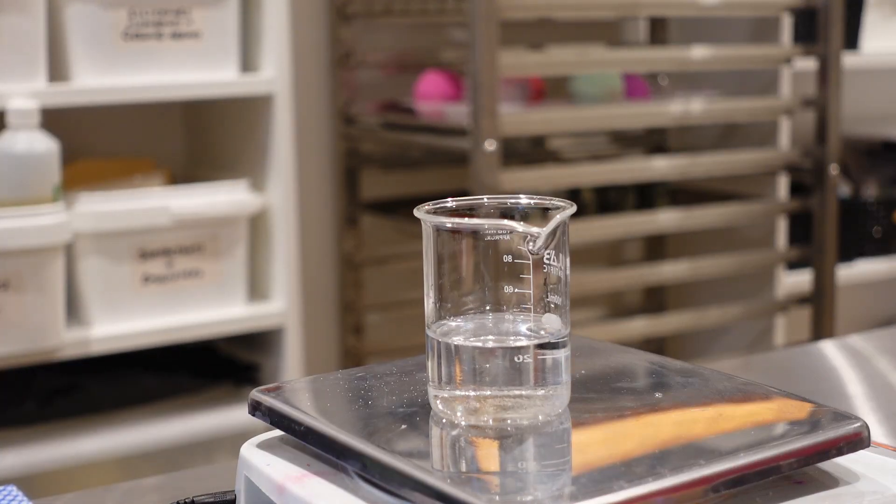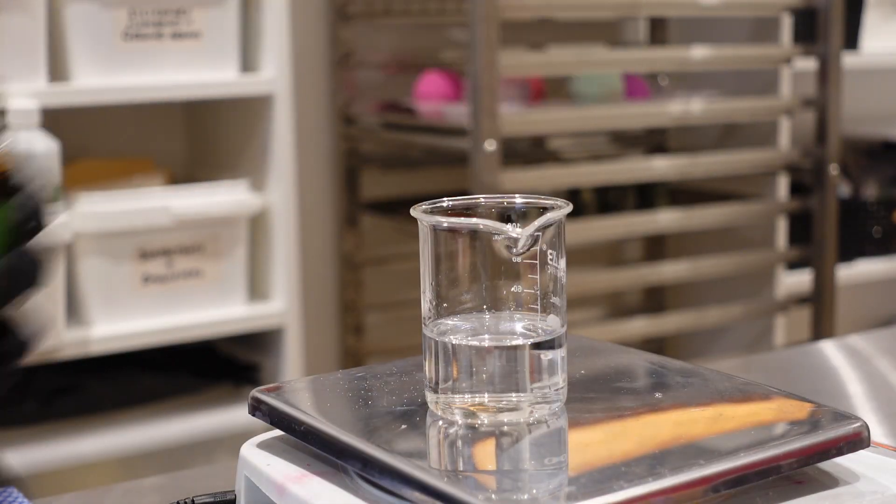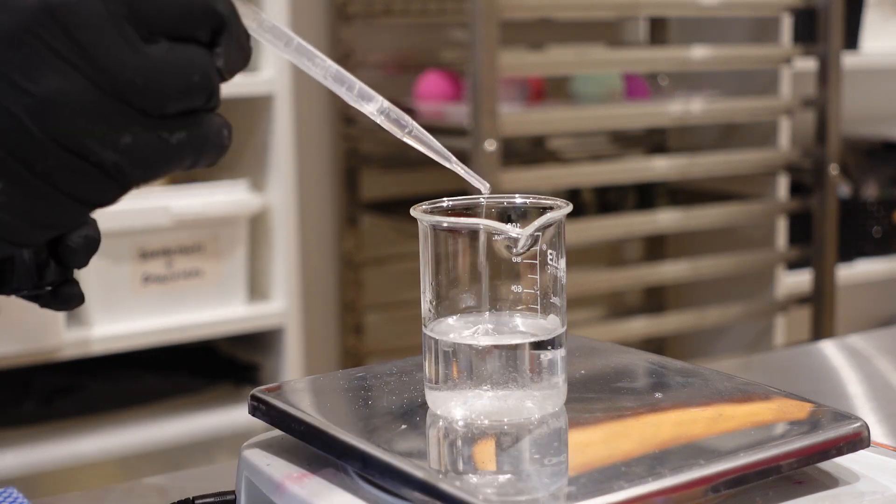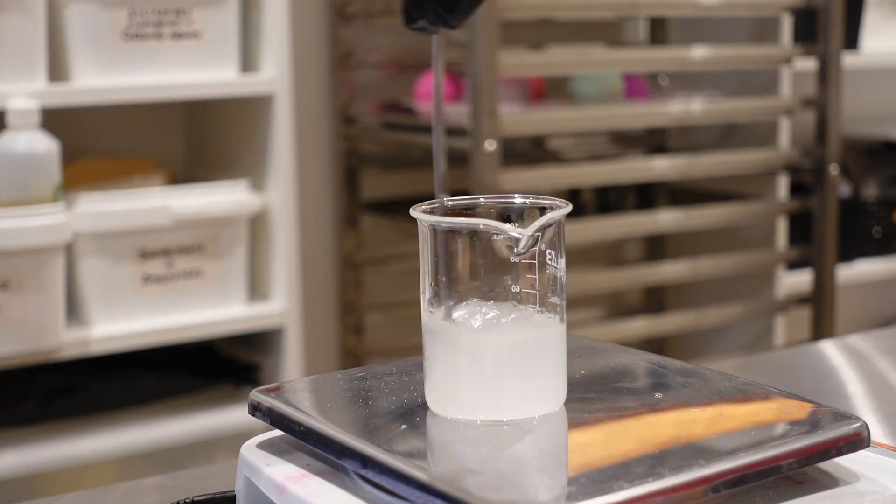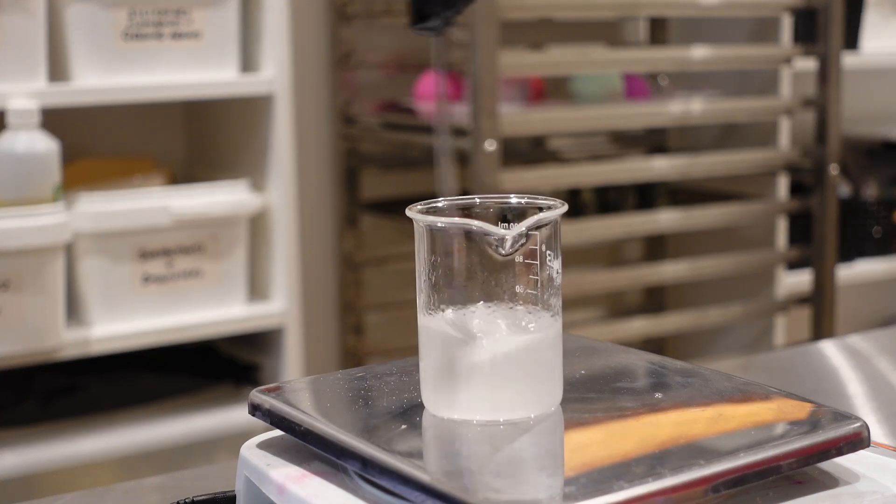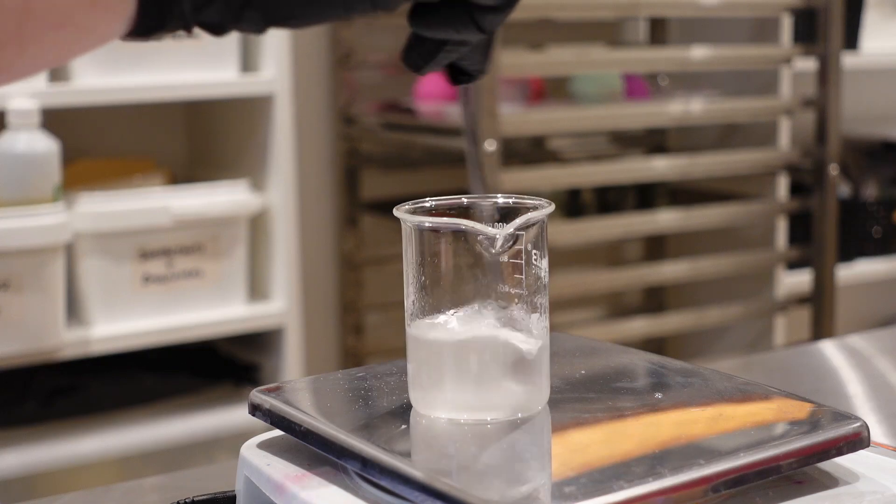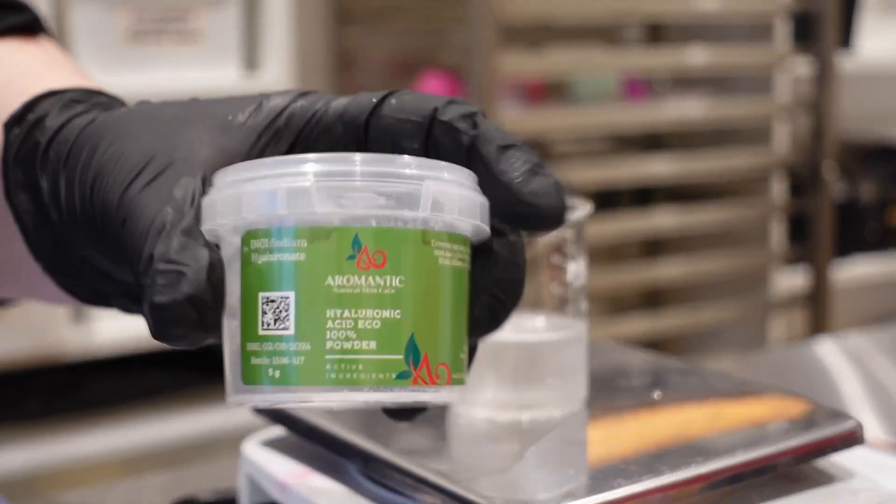Then I'm adding some preservative. For that, I'm using Saligard PCG. This is because it is water-soluble, it's very reliable, and it's also good for a broad pH range for this type of vitamin C. We do need a certain pH, which I'll go into a bit later.